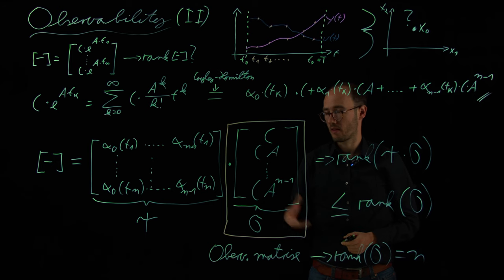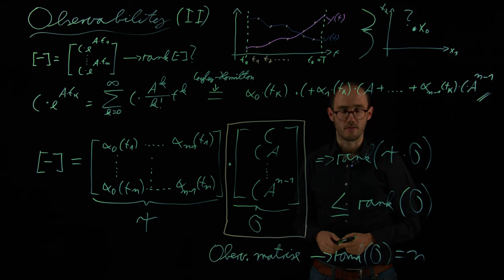With this, we will utilize this property in the subsequent lectures in order to find out if certain states can be estimated and if certain parameters can be calculated, can be identified. But up to now, it's a classical system theory property which describes an important characteristic of a state space model. And with this, I would thank you for your attention and we will see you in the next video.